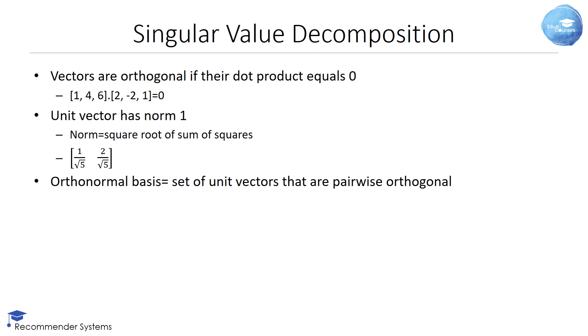Vectors are called orthogonal if their dot product equals zero. Consider the two vectors shown here. You can clearly see that their dot product equals 1 times 2 plus 4 times minus 2 plus 6 times 1 which equals zero. Hence, both vectors are orthogonal which also implies that they are linearly independent.